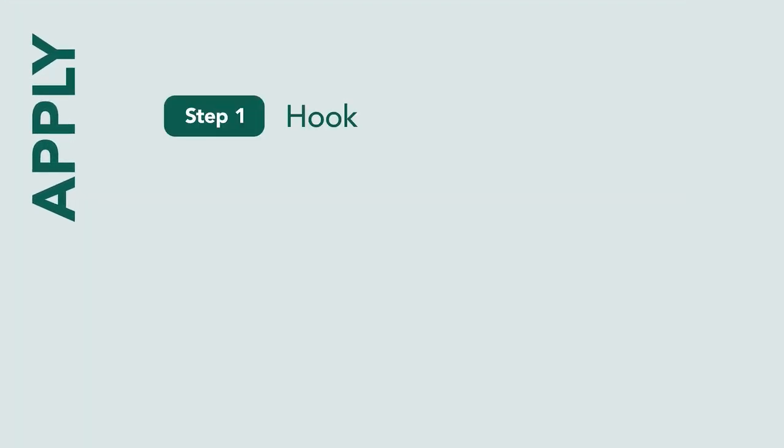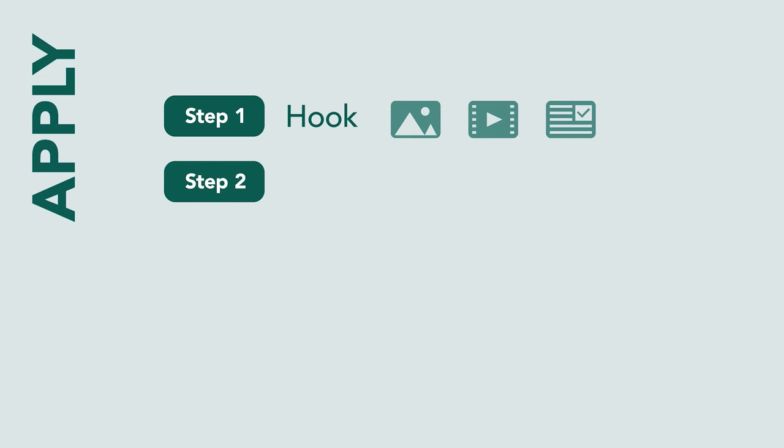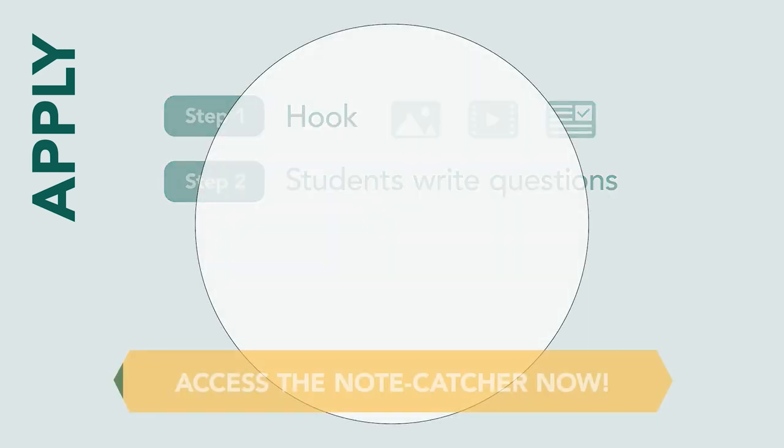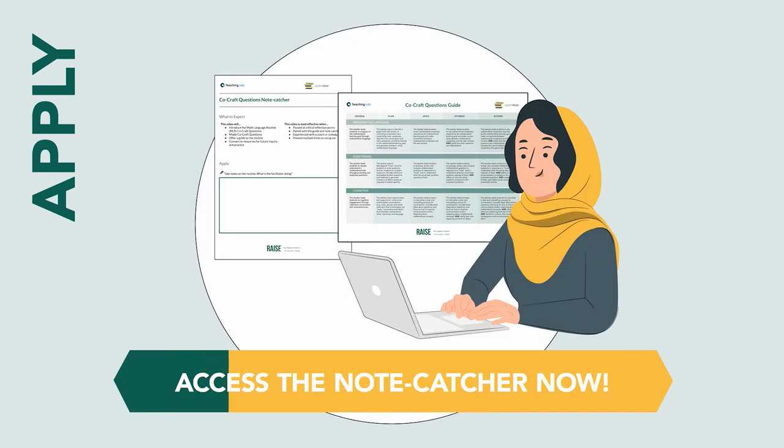The teacher will model two steps first. He will start with a hook — a context or stem for a problem without a direct question being asked. A hook can be a picture, video, or even a list of interesting facts. The point is to get students interested in the math behind the context. Then the teacher will ask students to write down possible mathematical questions that could be asked about the situation. Take this moment to access your note catcher.